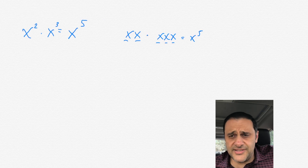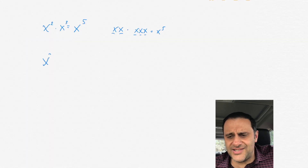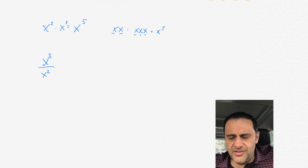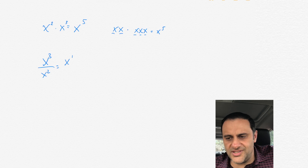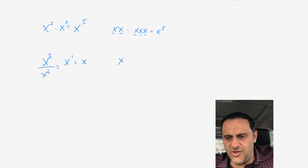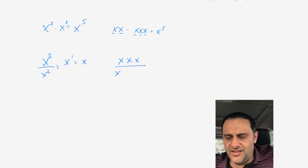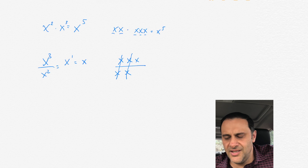If you have another example, you have x cubed over x squared. All we do here is we take 3 and subtract it by 2. We get 1, so that equals x to the 1, or just simply x. The reasoning here: imagine the top part — we have x cubed, so we have x, x, x divided by x squared, which is x, x. Those two x's cancel out, and you're left with 1x. So that's why it's x to the 1.